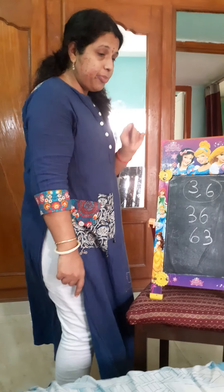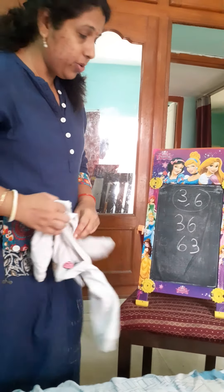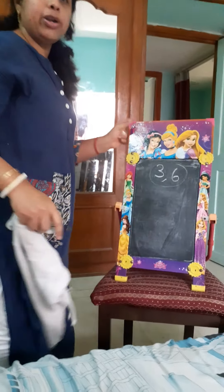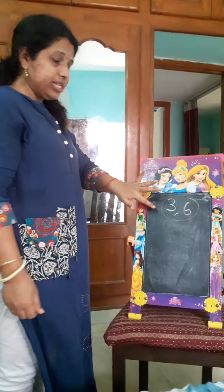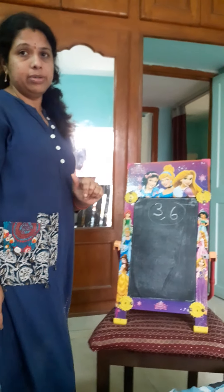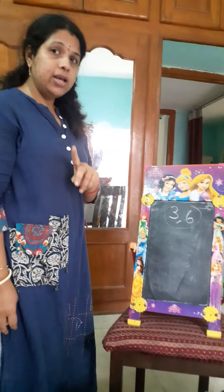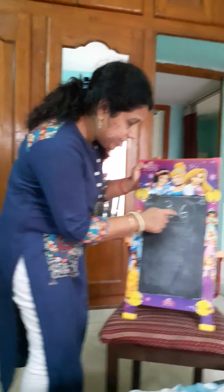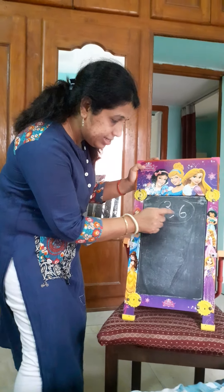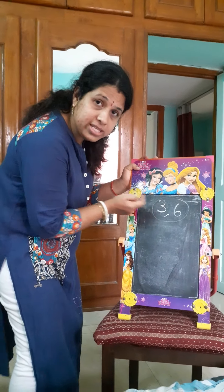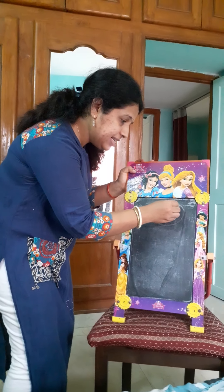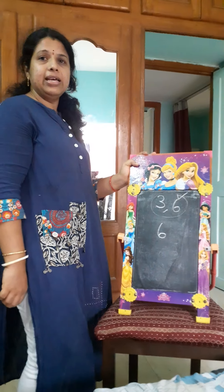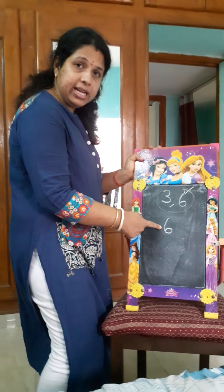Got it? Suppose I ask you to make the greatest number using these two digits. Greatest means the biggest number. How do we do that? Always see which digit is the greatest. Is it three or six? It is six. So six should be in the tens place.